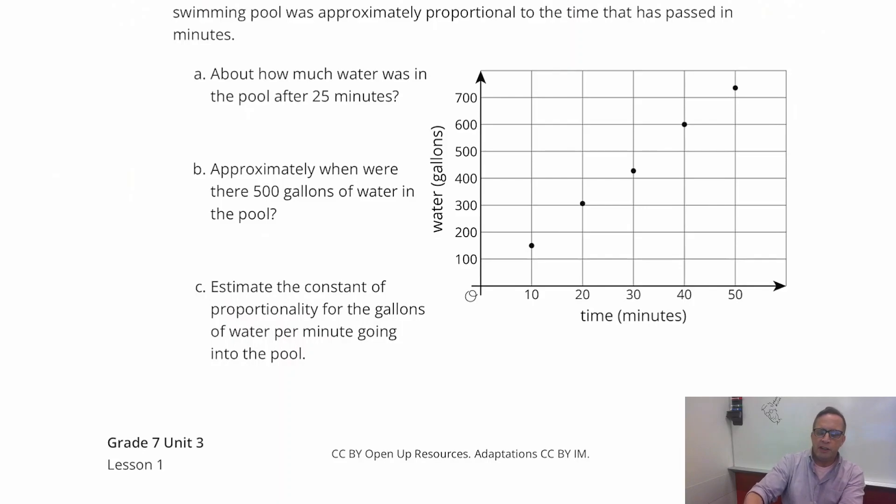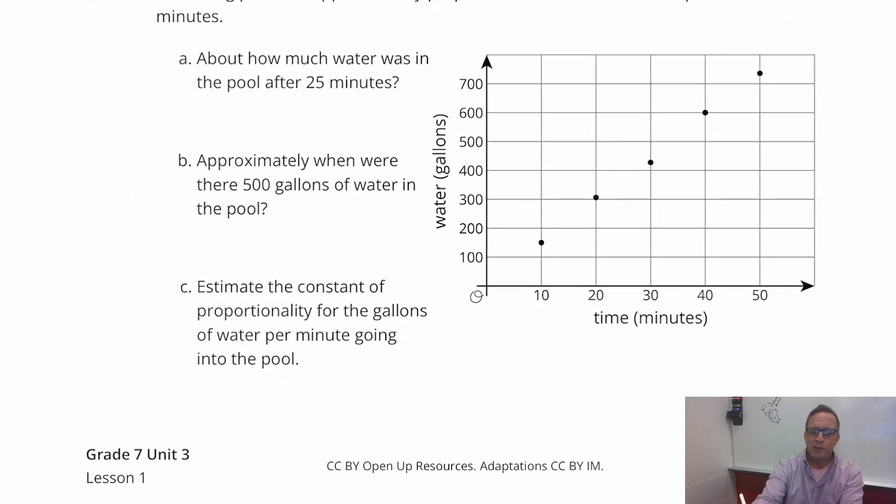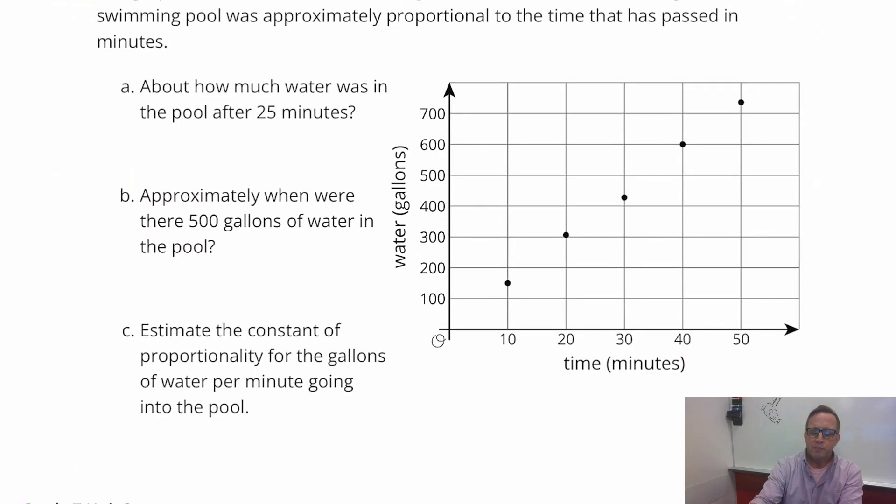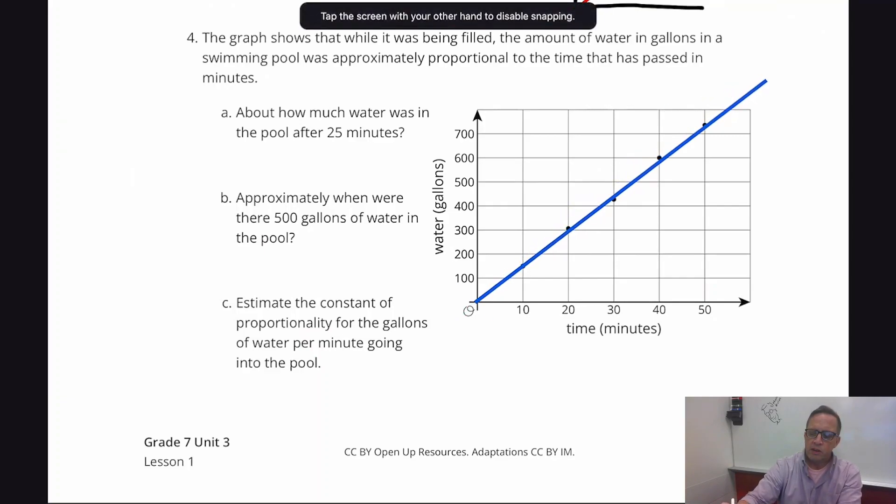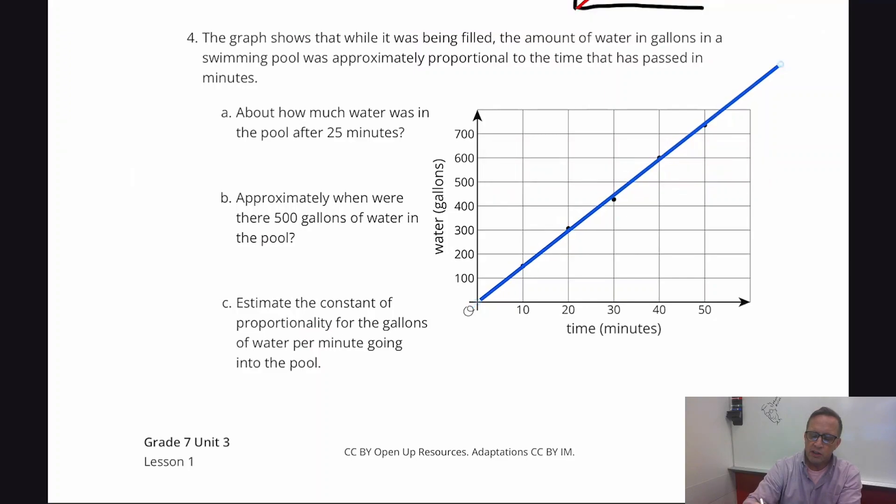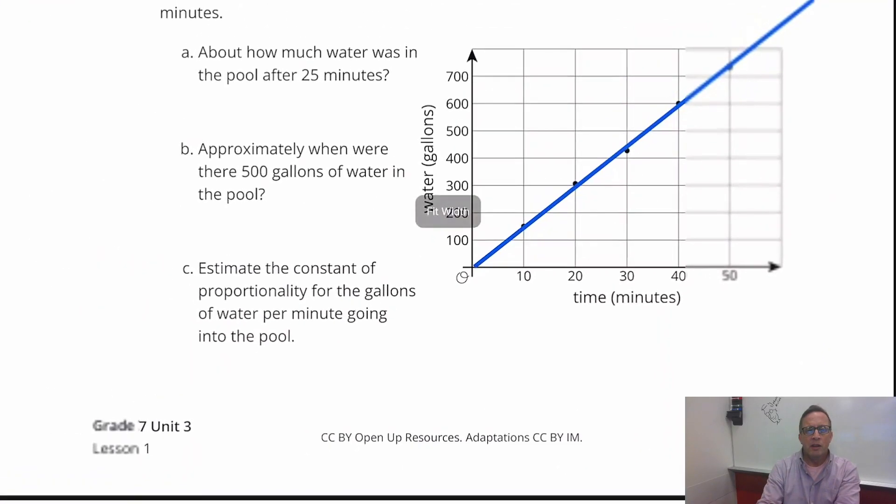This definitely looks like it's a proportional relationship. And I'm going to go ahead and just draw using my drawing tool here. That's not perfect, that's for sure. This kind of goes to say, again, these are human beings measuring, taking these measurements and doing these things. So there could be a little bit of a margin of error there. And that's going to happen, that's always going to happen.